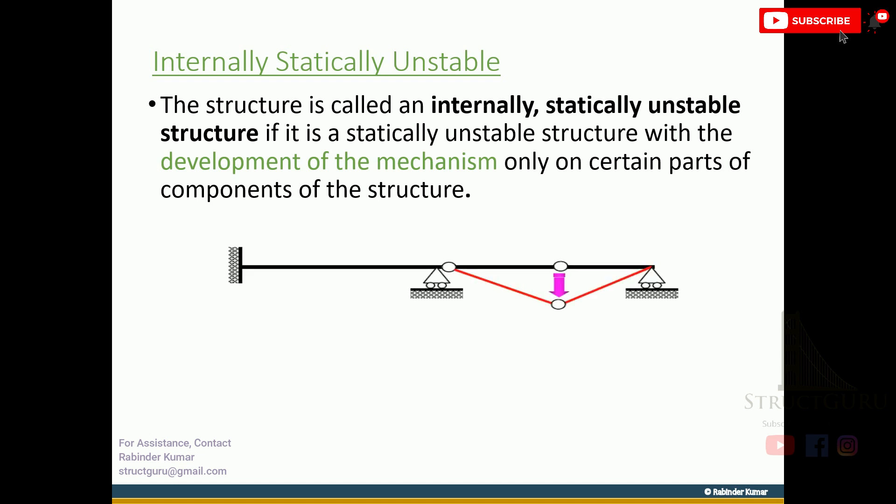For example, here is a beam. This beam consists of an internal pin. Upon the application of loading, this pin will try to move in the downward direction, so this member becomes unstable. Here is another example: this is a frame with a roller support on this side and pin connection on this side. Upon application of load, this member will try to move in the horizontal direction, so this is also an internally unstable structure.